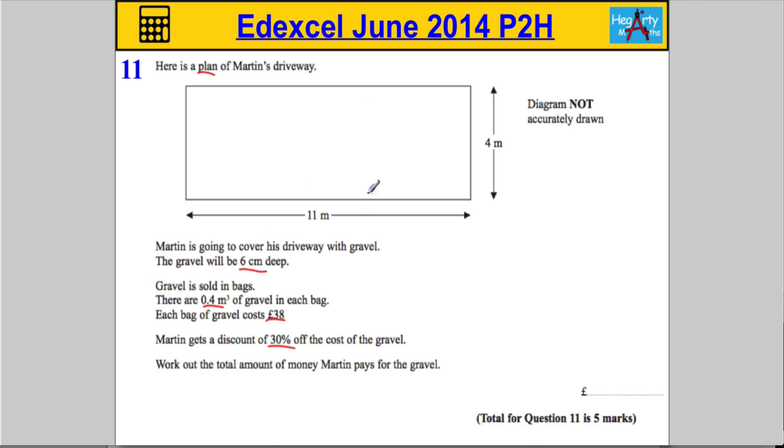The first thing we're going to have to do is actually calculate the volume of the driveway in order to work out how many bags he's going to require. So the volume is going to be found by doing 11 times by 4 times by, now be incredibly careful here. This is in meters, this is in meters. The depth we're going to have to consider in meters as well, which is going to be 0.06 of a meter.